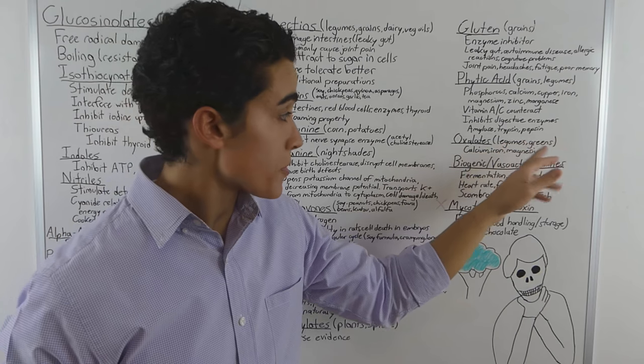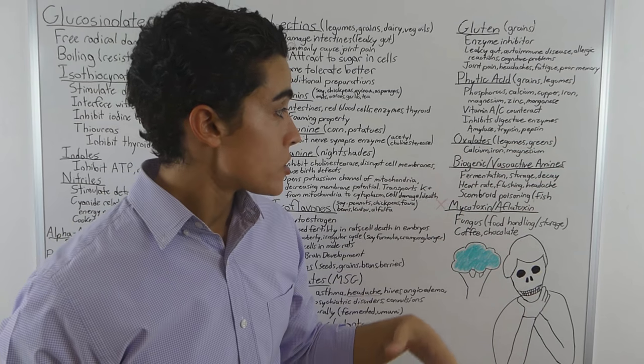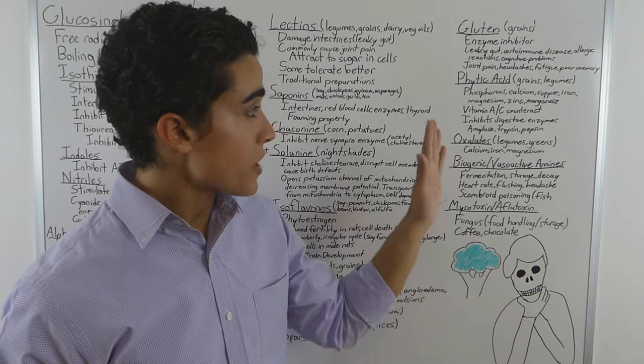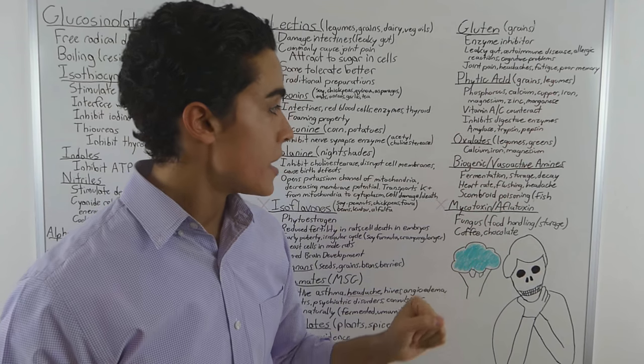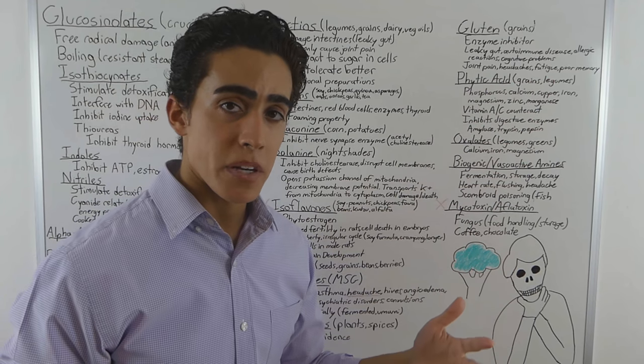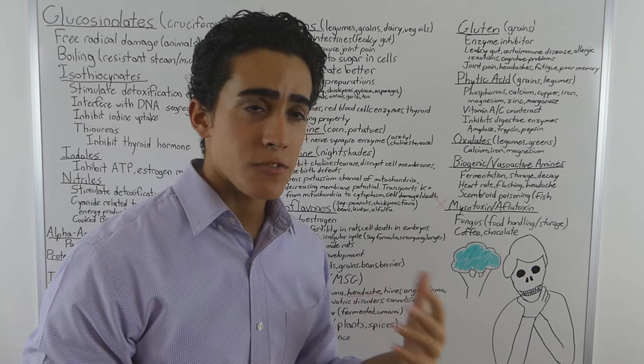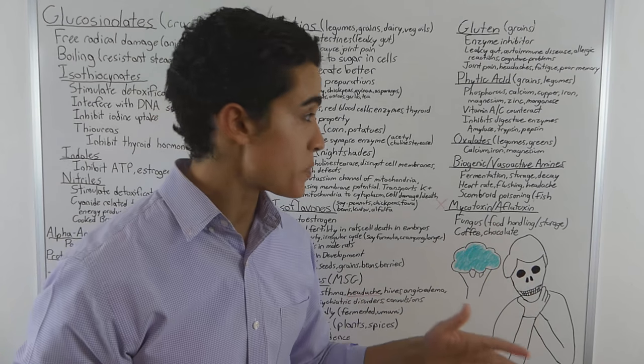So not only is phytic acid inhibiting these minerals, oxalates also overlap for things like calcium and magnesium. So in a lot of cases between the phytic acid inhibiting mineral absorption and oxalates binding to minerals,